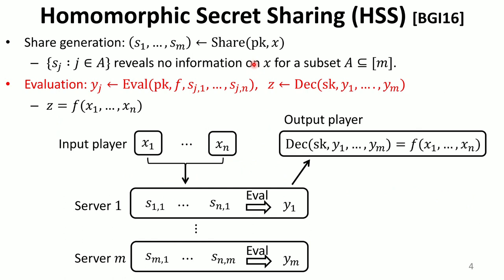Homomorphic Secret Sharing is an important building block for multiparty computation. It is a variant of secret sharing, and so it has a sharing algorithm which takes a secret as input and outputs m shares. As in the standard security definition, we require that some specified subset of shares reveals no information on the secret. Homomorphic Secret Sharing has additional algorithms called evaluation and decoding algorithms. Suppose that the input players generate m shares from their private inputs and send the shares to m servers. Then each server locally runs the evaluation algorithm on a function f and n shares it receives from the input players. Finally, an output player collects all outputs of the evaluation algorithms.